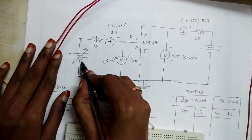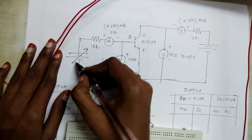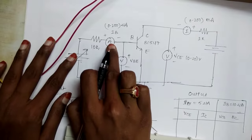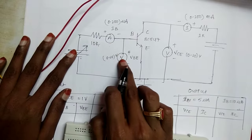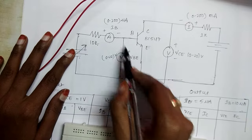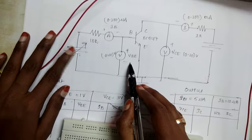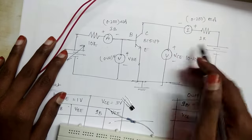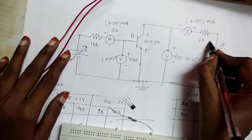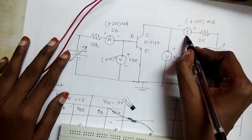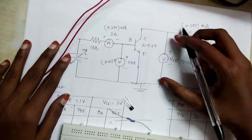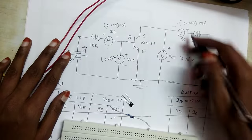The RPS (regulated power supply) provides variable voltage to energize the circuit. The ammeter measures the input current IB, and the voltmeter measures VBE — the input voltage for CE configuration. On the output side, another RPS with a 1K resistor limits the current. The output ammeter measures IC (collector current), and the output voltmeter measures VCE (collector-emitter voltage).